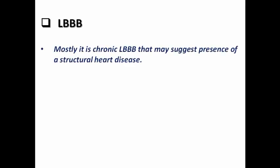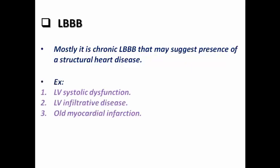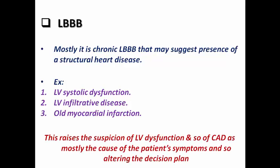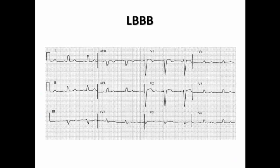What about left bundle branch block? In most cases it is a chronic left bundle branch block that may suggest structural heart disease — for example, LV systolic dysfunction, LV infiltrative disease like amyloidosis, or old myocardial infarction. This raises suspicion of LV dysfunction, and in a patient presenting with chest pain, I would suppose mostly ischemic heart disease. This may alter the management plan, as I would not need stress imaging — I would apply the Sgarbossa criteria to confirm chronic LBBB and proceed to ECG and echo to diagnose chronic coronary syndrome.